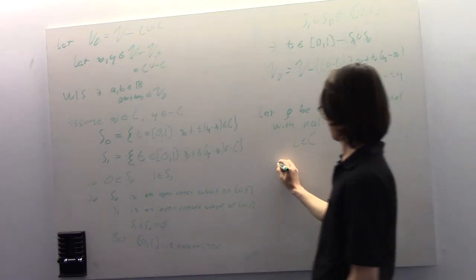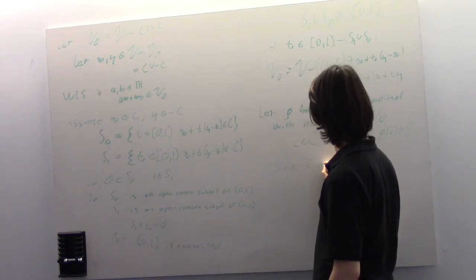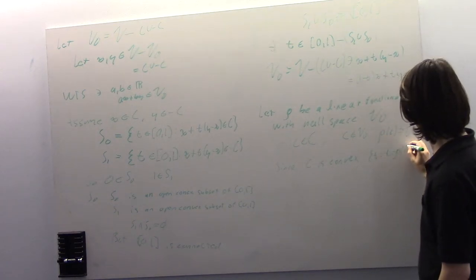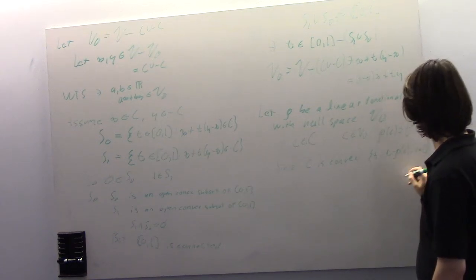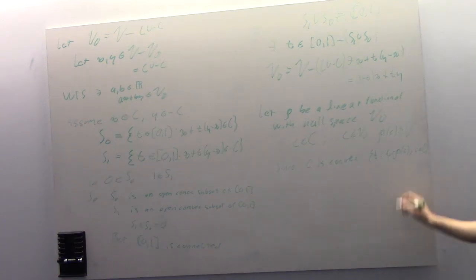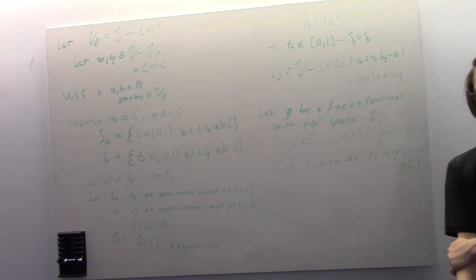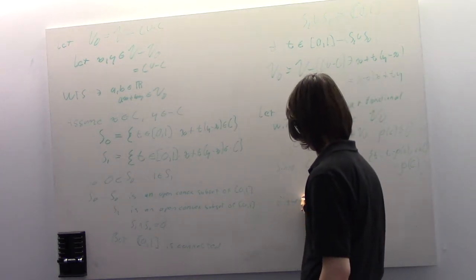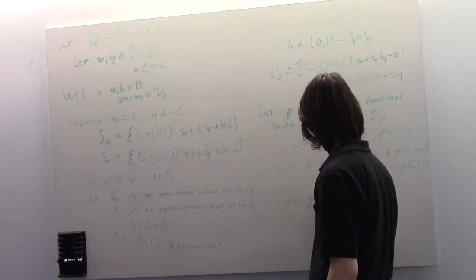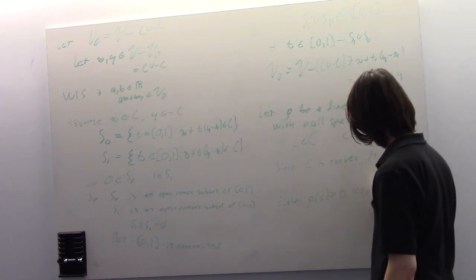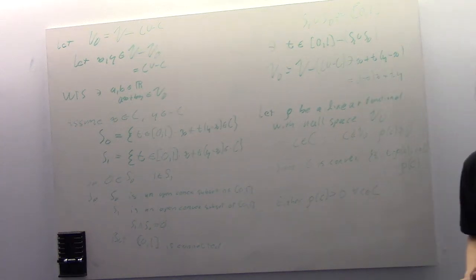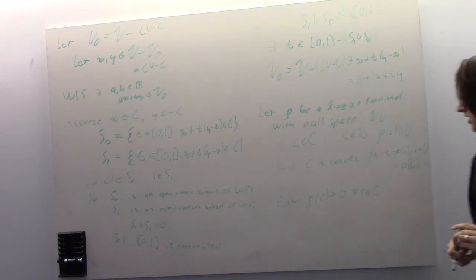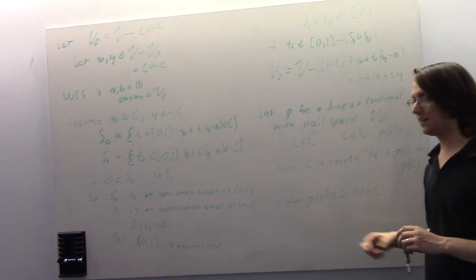C is convex. The set of T such that T equals rho of c for c in C must be convex — that's the image rho of C. Rho of C is convex and does not contain zero. So either rho of c is greater than zero for all c in C, or it's less than zero. But we can always take minus rho, which has the same null space. So we can just assume rho of c is greater than zero.